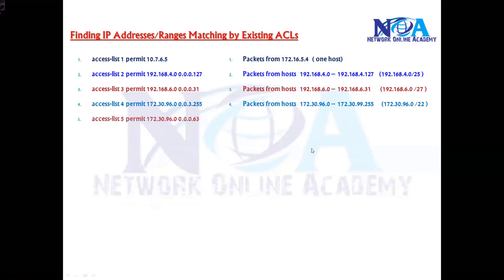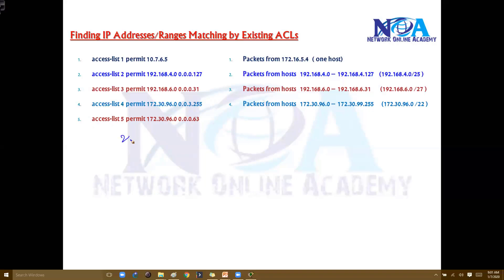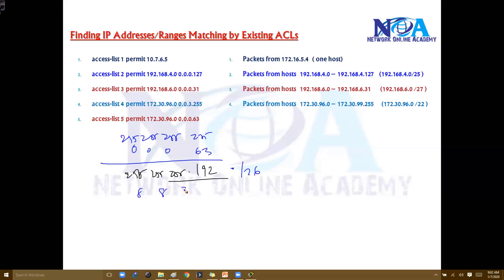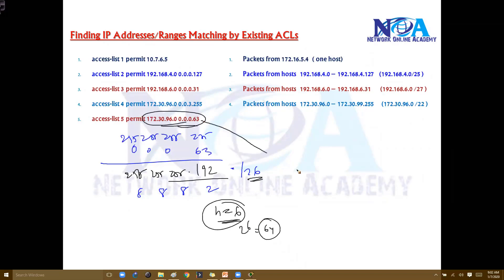Similarly, another example: 172.30.96.0 with wildcard mask 0.0.0.63. Subtracting from all 255s: 255 minus 63 is 192, so subnet mask is 255.255.255.192, which is slash 26 — that's 8+8+8+2 bits. Host bits are 6, and 2 to the power of 6 is 64. So this matches all addresses in the range 172.30.96.0 to 172.30.96.63, with subnet mask /26.